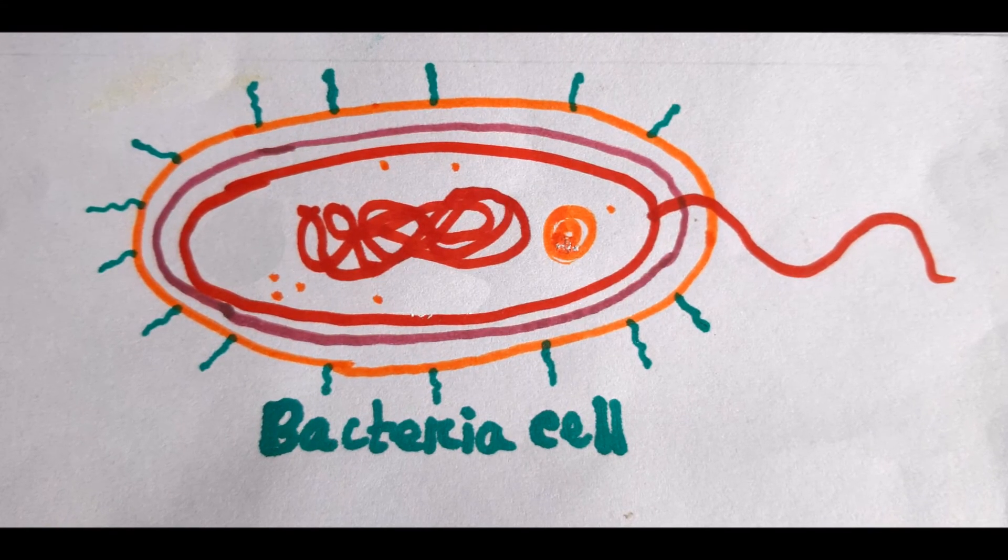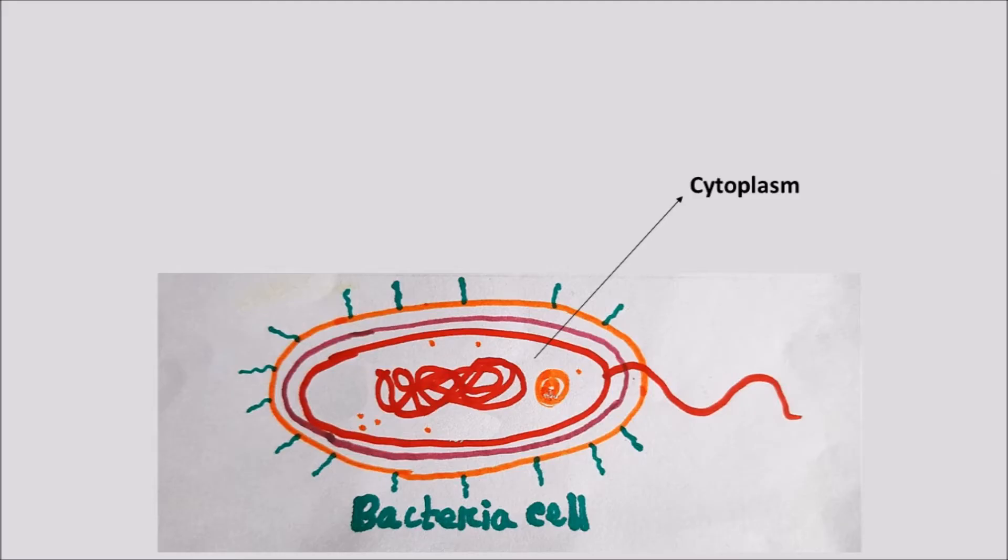Next is the bacterial cell. This also has cytoplasm, cell membrane, ribosomes, and a cell wall. But the cell wall here, unlike the plant cell wall, is made up of protein-sugar molecules.